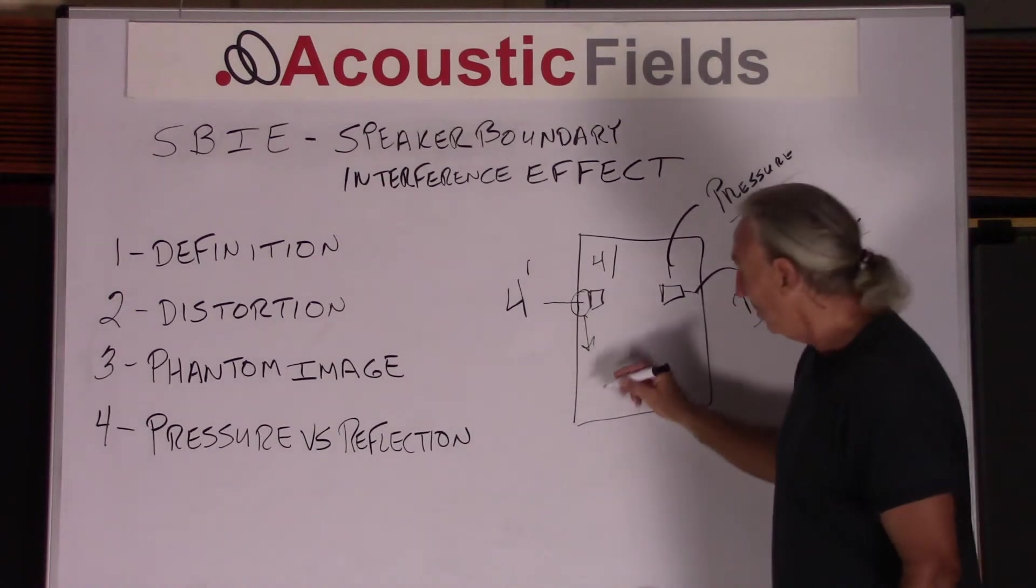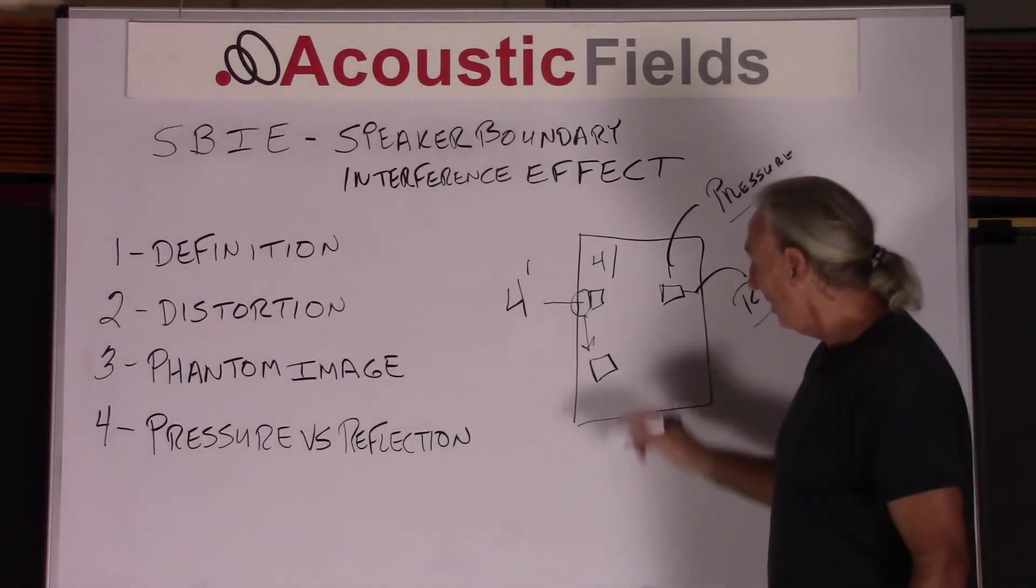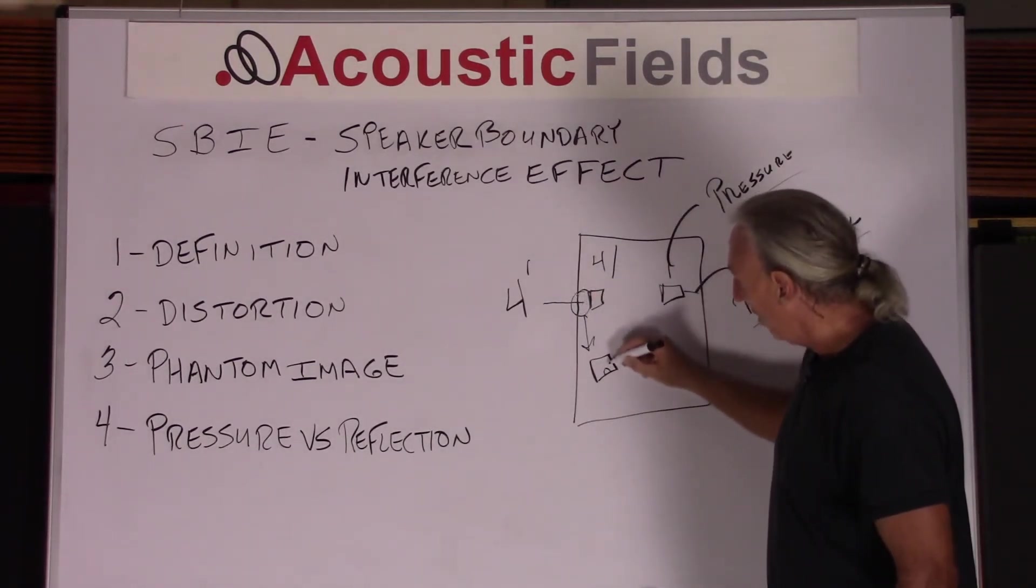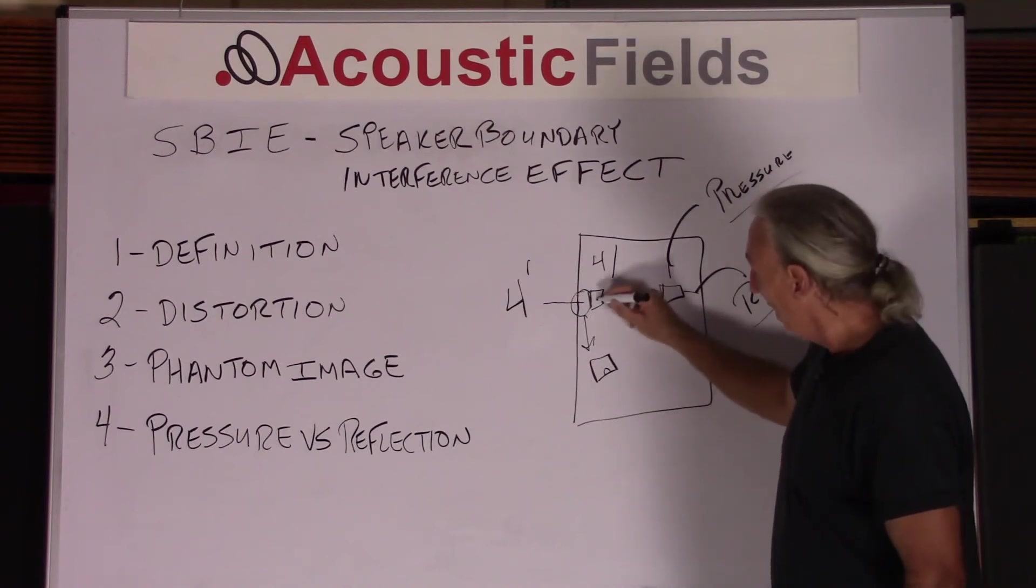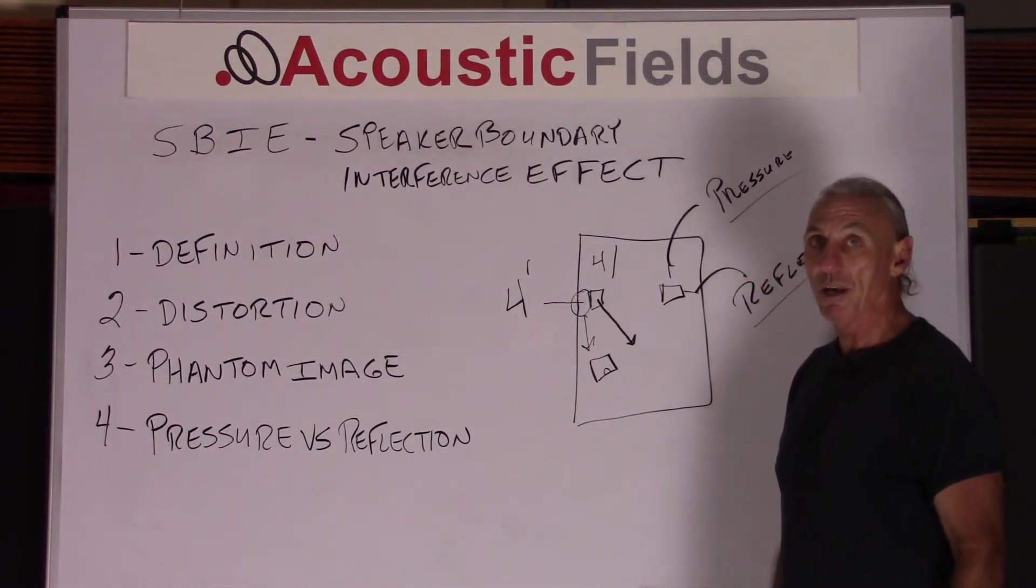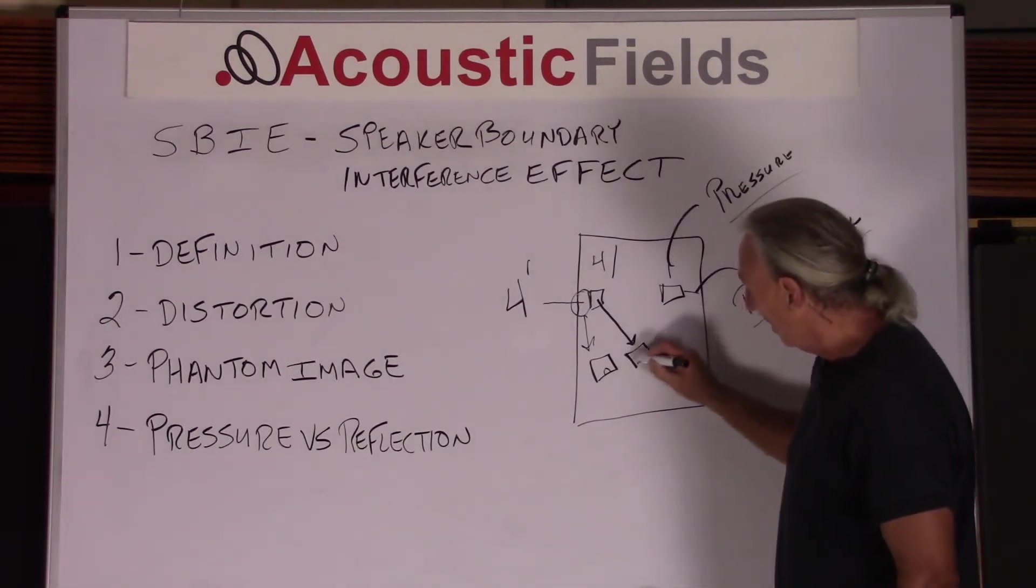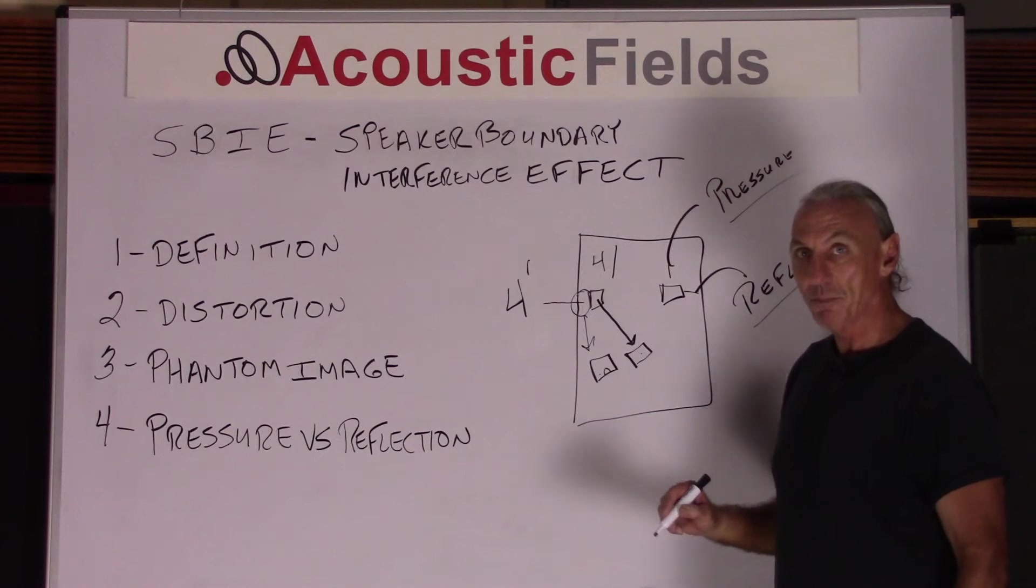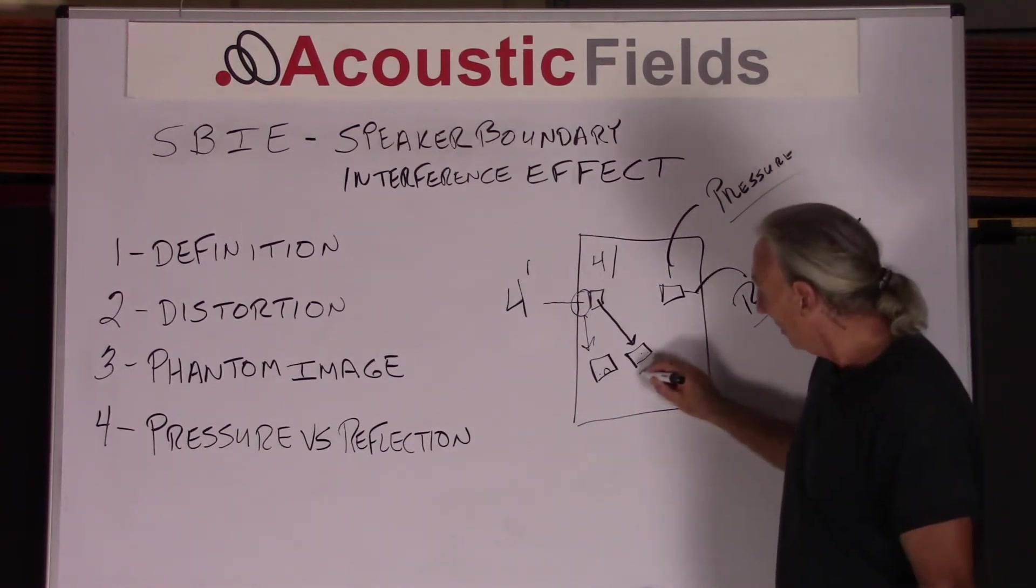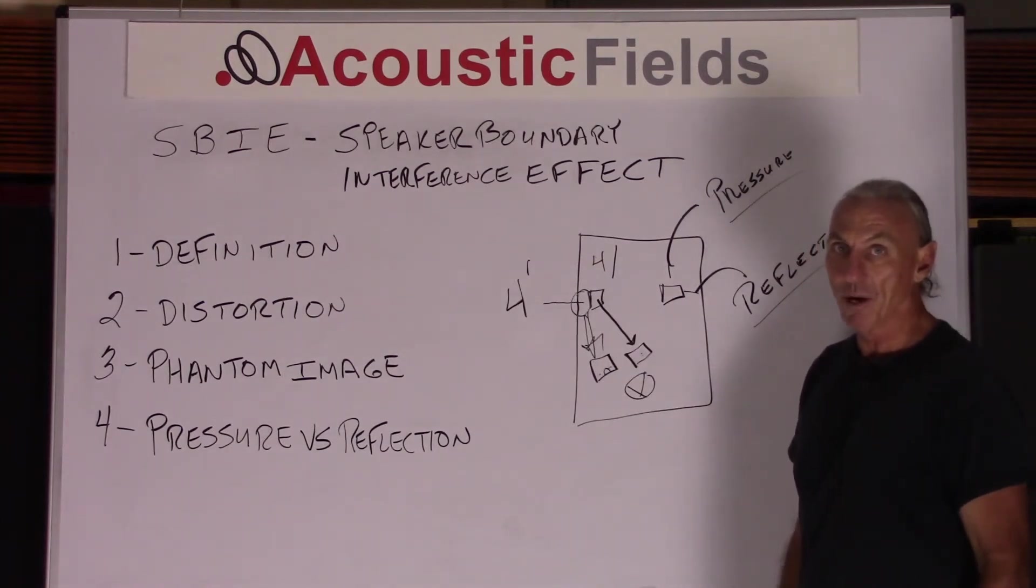What does that distortion do? It sounds like another speaker. It produces a phantom image. So now you have a speaker that's all about distortion and then you have a speaker here that's all about no distortion and producing quality sound. So then these two, the phantom image and your speaker mix together. So at the listening position, you get a combination of both. And that's not what you want.